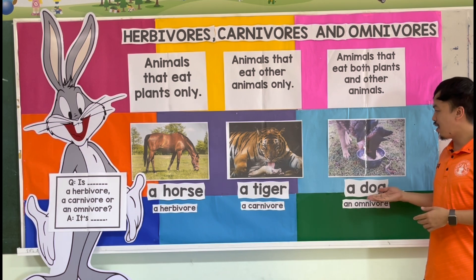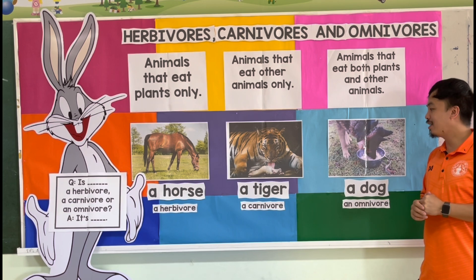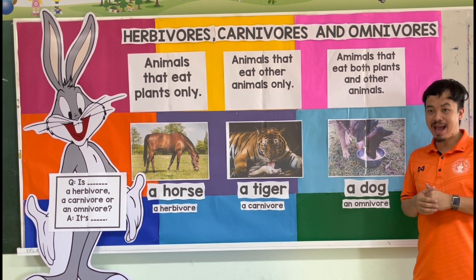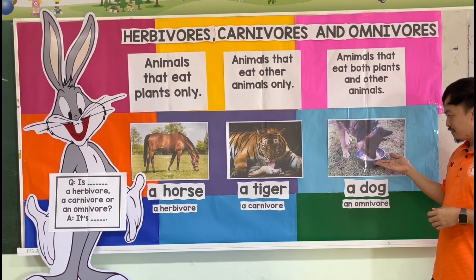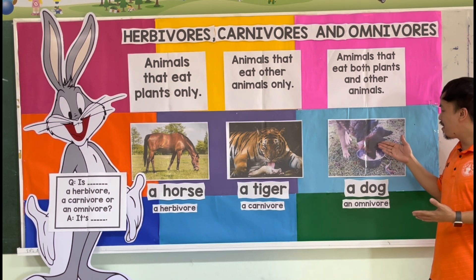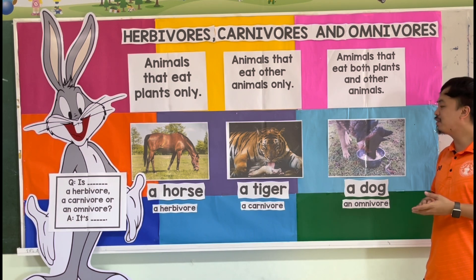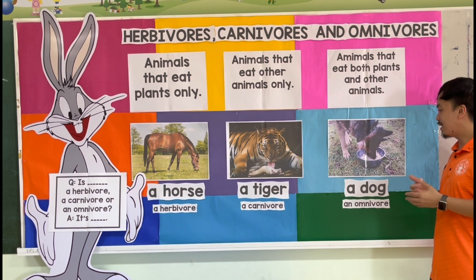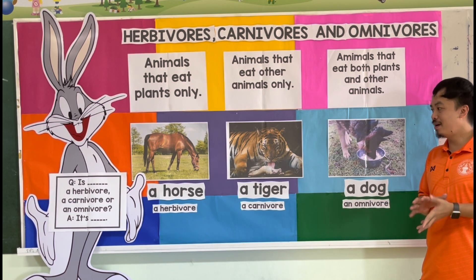And for the last example, we have a dog. What does a dog eat? A dog eats both plants and animals. As you can see from the picture, this dog eats rice — rice is from plants — and at the same time it can also eat meat. Therefore, a dog is an omnivore.